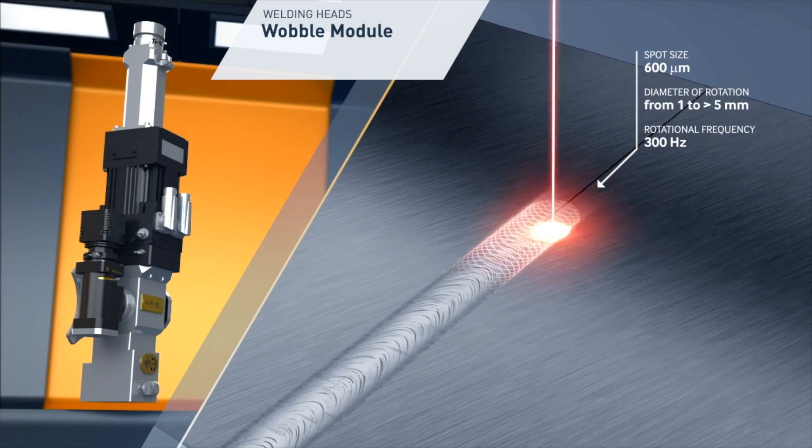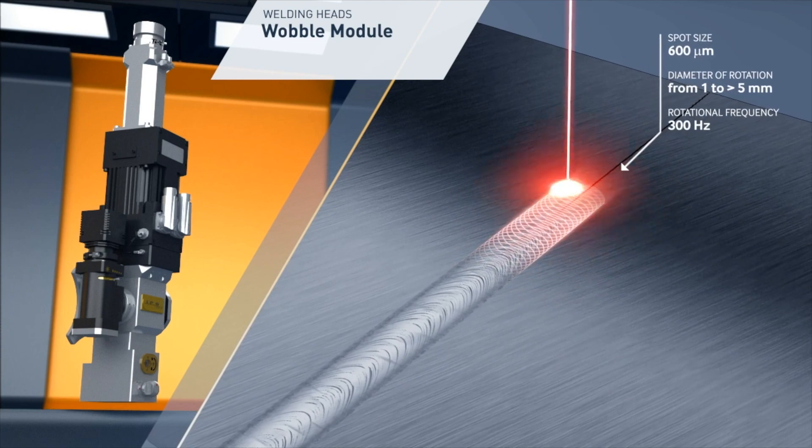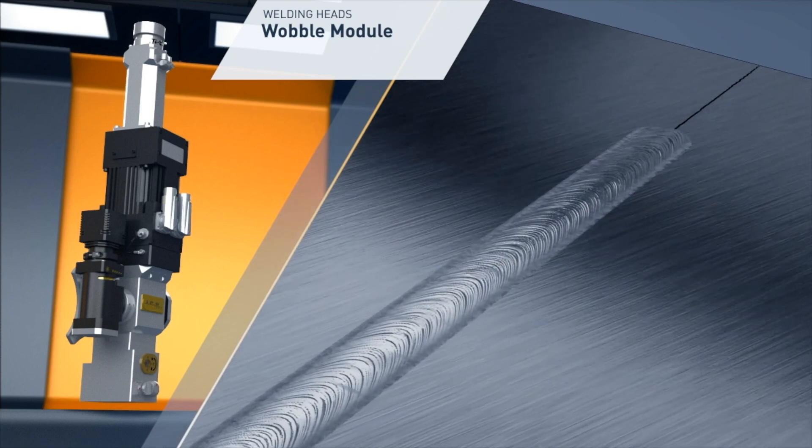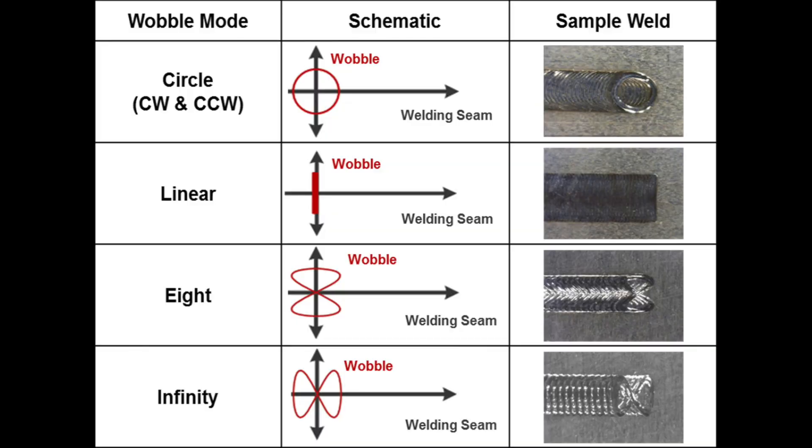Wobble welding technique uses the dual galvanometers contained in the weld head to generate a dynamic feature, which is then scanned across the joint to be welded. Standard features include circles, lines, figure eight, and infinity shapes.